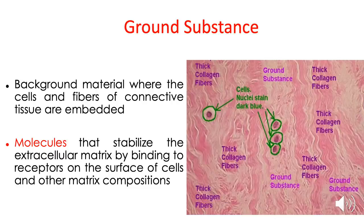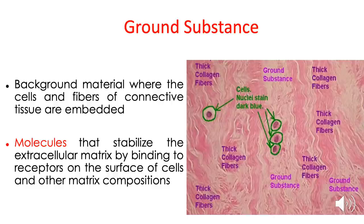We will now discuss the different components of our connective tissue. Let's start with the ground substance. Ground substance is the background material where the cells and fibers of the connective tissue are embedded. They may look like empty spaces, but these ground substances are very important — they are composed of chemicals that bind cells of the connective tissue together. They can also bind cells to the fibers, and fibers to other fibers.